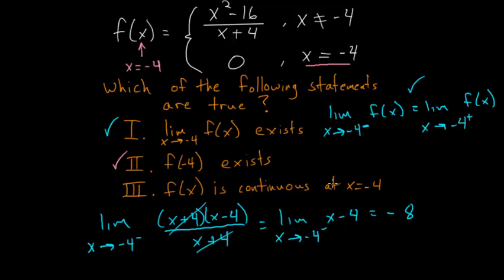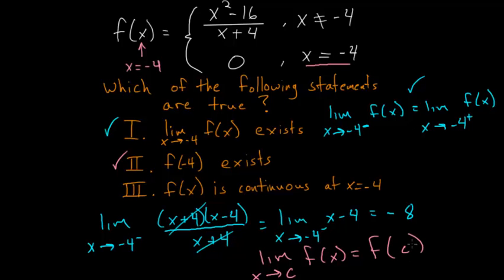The last question asks whether the function is continuous at negative 4. For a function to be continuous, the limit as x approaches some value c of the function has to equal the function evaluated at that point c. So the limit as x approaches negative 4 has to equal f(negative 4). We know the function equals 0 at negative 4, but if we take the limit as x approaches negative 4 — using the same argument from the first question — the limit equals negative 8. Since negative 8 is not 0, the function is not continuous at this point.